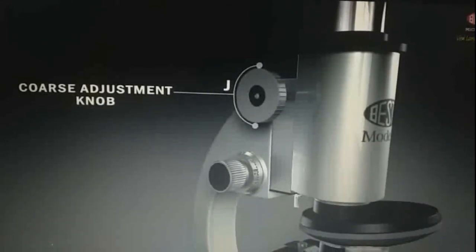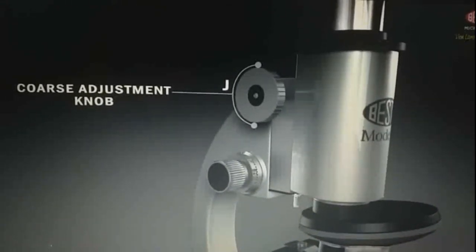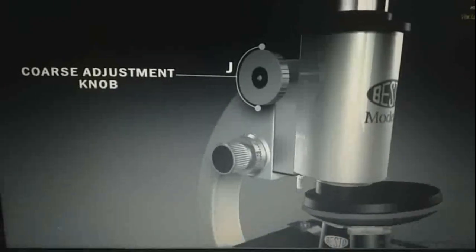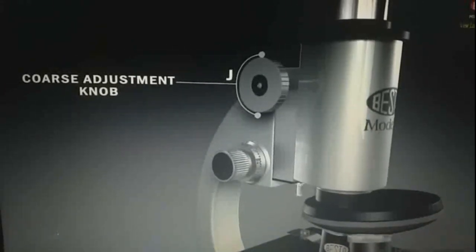J, coarse adjustment knob. It is the large knob used to adjust the position of the body tube allowing you to quickly bring your sample slide into view.